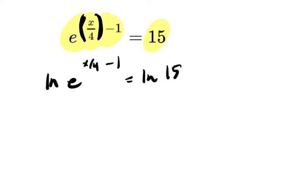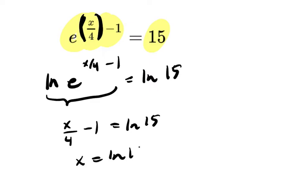It's a fraction. The order of operations is preserved. You still do x divided by 4 minus 1. Well, when you take the natural log of e to this power, you just get x over 4 minus 1 equals the natural log of 15. So what does x equal? Add 1 to both sides and multiply by 4. Add 1 and then multiply by 4.